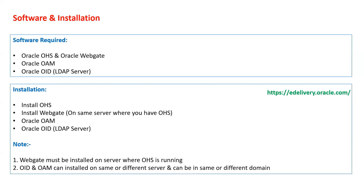For installation: first install OHS, then install WebGate on the same host as OHS. After that, install OAM and then OID. An important note: WebGate must be installed on the server where OHS is running. Depending on your architecture, OHS may be on the same host as your WebLogic application server, or on a separate host in production — in that case, install WebGate on the OHS server.